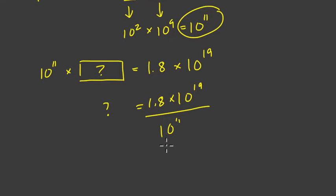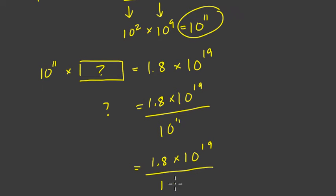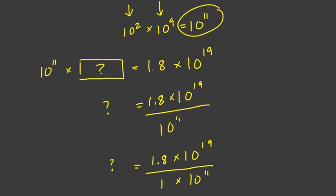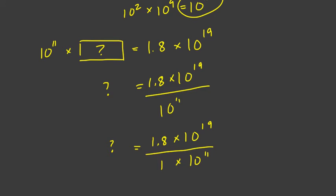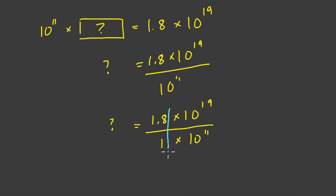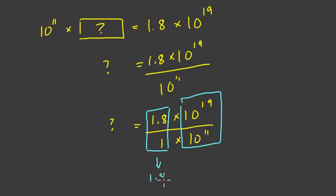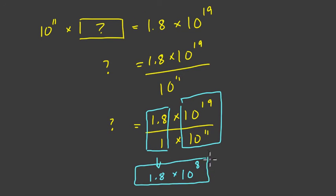How do we do this? We can think of this fraction as 1.8 times 10 to the 19th over 1 times 10 to the 11th — I'm just rewriting the denominator, 10 to the 11th, as 1 times 10 to the 11th. This allows me to recognize that this division can be broken down in two parts: 1.8 divided by 1, which is just 1.8, and 10 to the 19th over 10 to the 11th. We subtract the exponents since we're dividing with the same base, giving just 10 to the 8th. So our answer is 1.8 times 10 to the 8th.